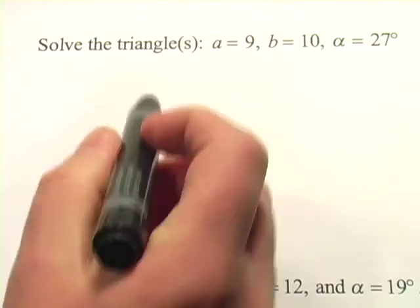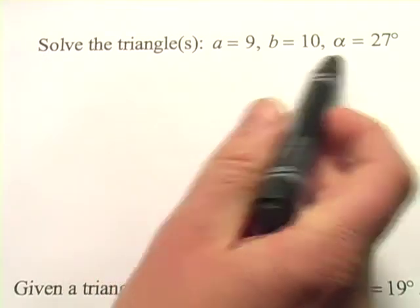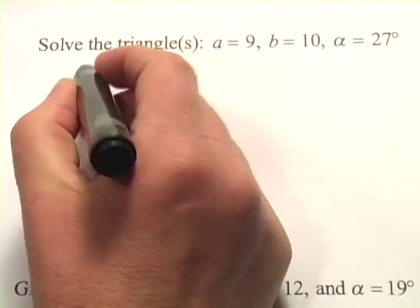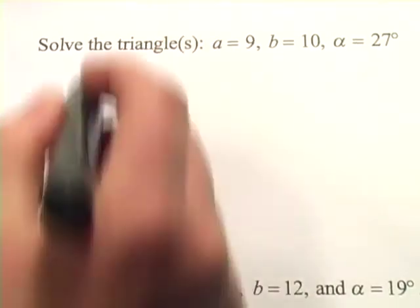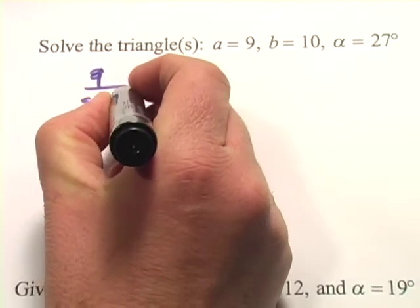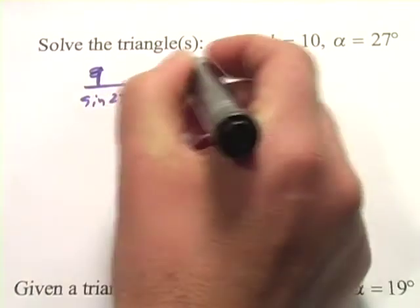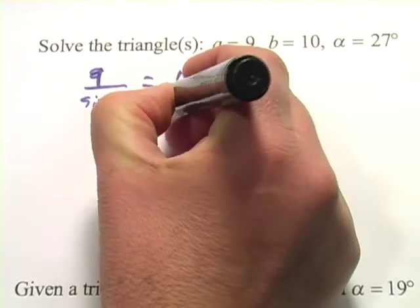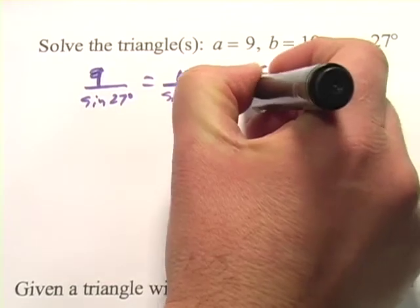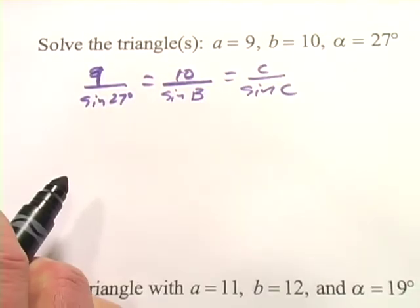So this one says solve the triangles: a equals 9, b equals 10, and the angle A is 27 degrees. So we can set this up with law of sines. 9 over the sine of 27 degrees equals 10 over the sine of B, and that equals C over the sine of C. We don't know either of those values yet, but we'll find them out.